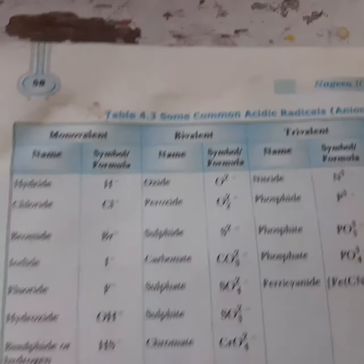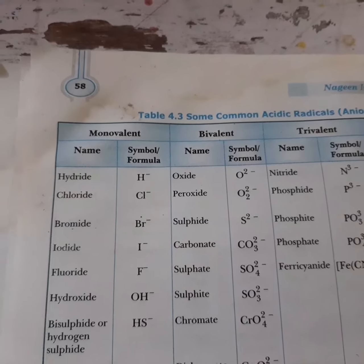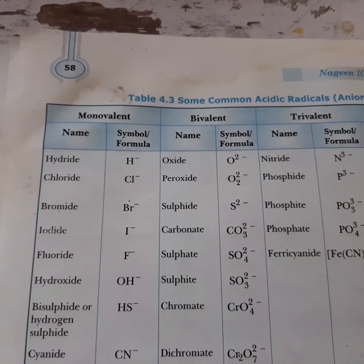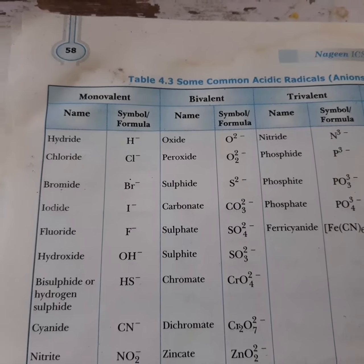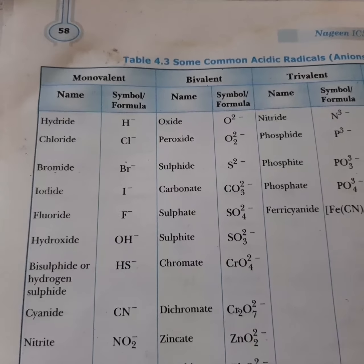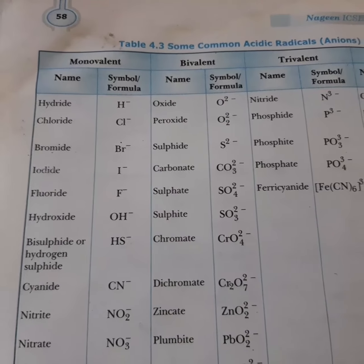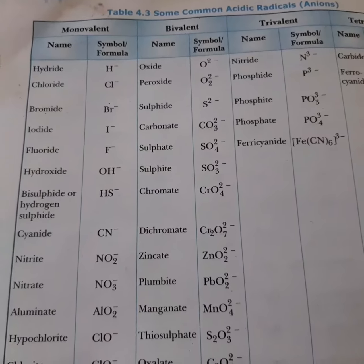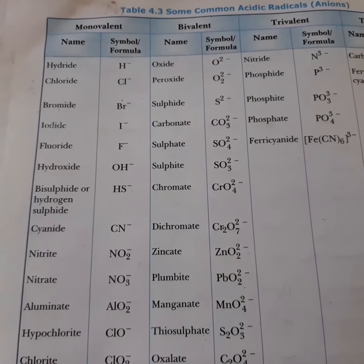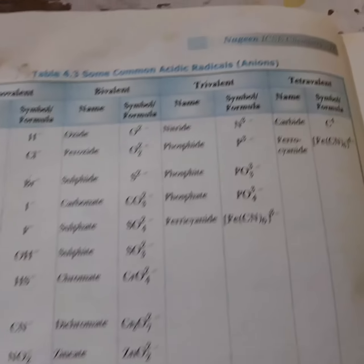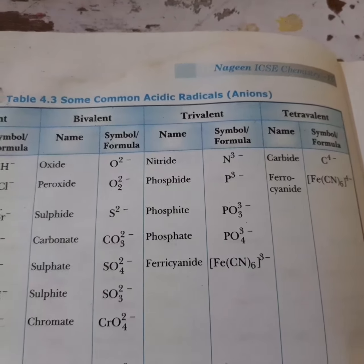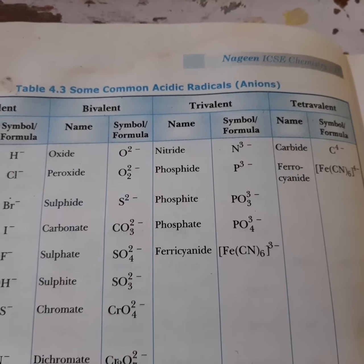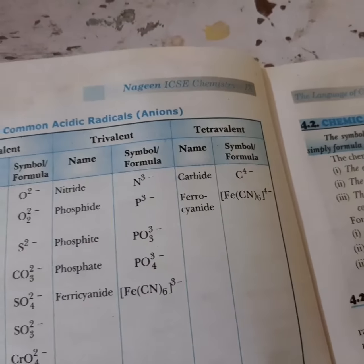Similarly, we have a list of bivalent anions — acidic radicals with a charge of minus two — such as: oxide O2−, peroxide O22−, sulfide S2−, carbonate CO32−, sulfate SO42−, sulfite SO32−, and chromate CrO42−. Then we have trivalent anions with a charge of minus three.